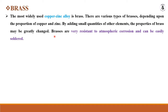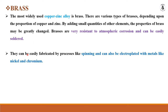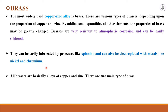Brasses are very resistant to atmospheric corrosion and can be easily soldered. They can be easily fabricated by processes like spinning and can also be electroplated with metals like nickel and chromium. All brasses are basically alloys of copper and zinc, and there are two main types of brasses.